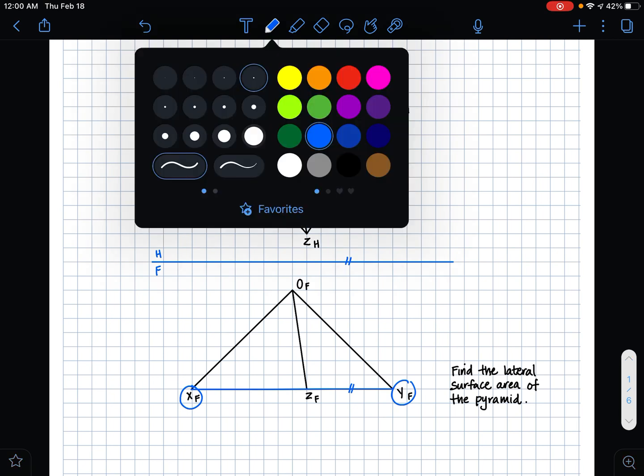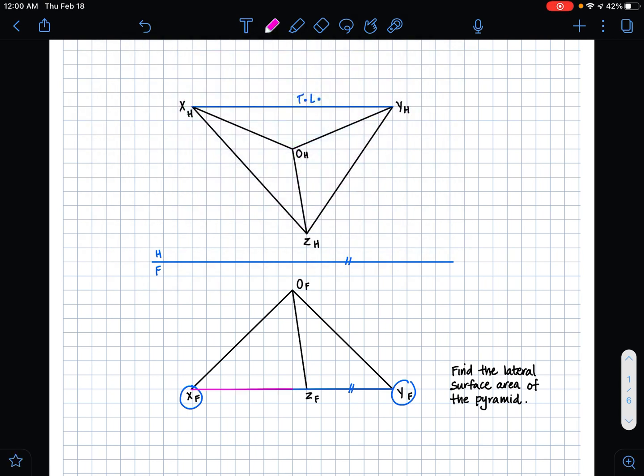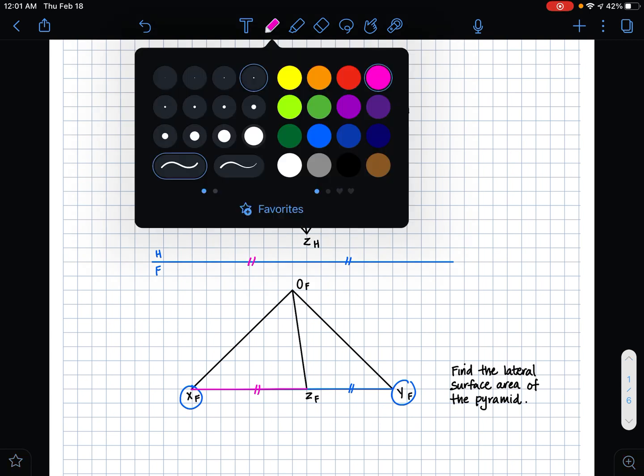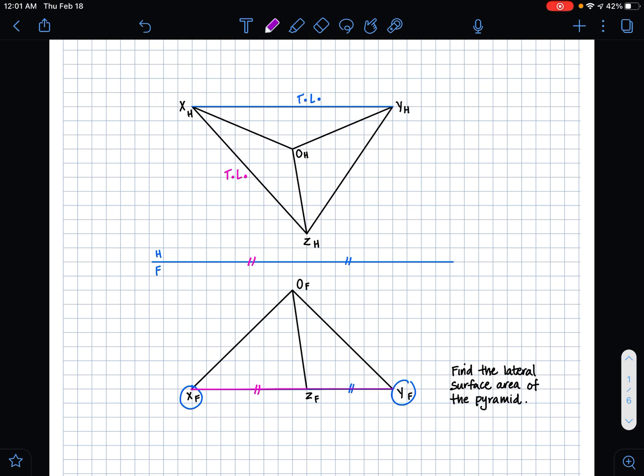And if we take a look at line XZ in our horizontal plane, or sorry, in our frontal plane, we can see that this line, because it also is our XY line, we can see that it's parallel to our HF folding line. So that means that our XZ line in our horizontal plane is a true length line.